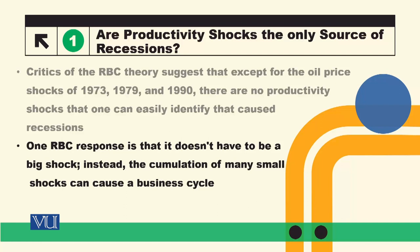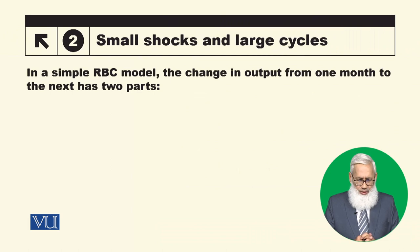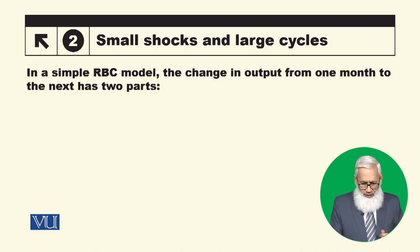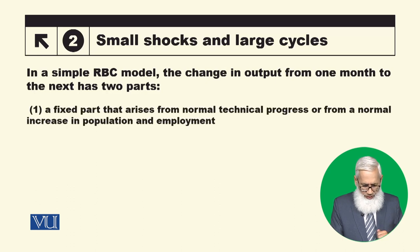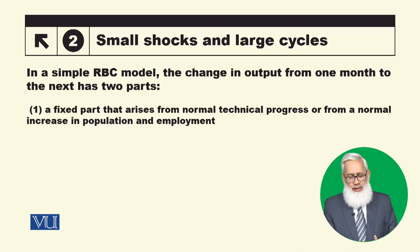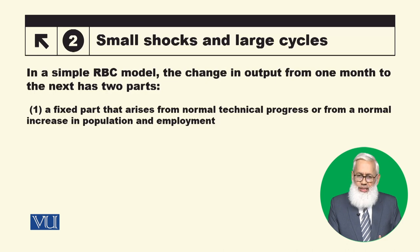Small shocks can produce large fluctuations. The change in output from one month to the next has two parts. The first is the fixed part that arises from normal technical progress or from a normal increase in population and employment.